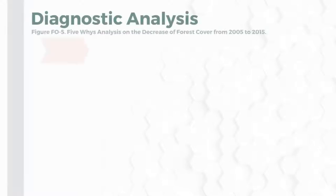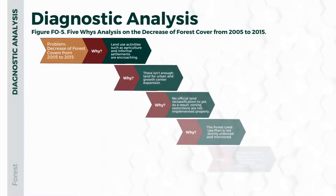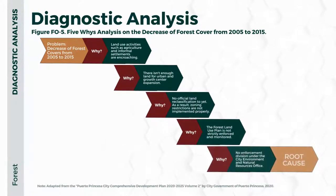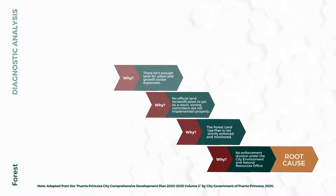This figure shows the five-whys analysis applied to the problem of decreased forest cover from 2005 to 2015. The first why: land use activities such as agriculture and informal settlements are encroaching. Why? There isn't enough land for urban and growth center expansion. Why? No official land reclassification results in zoning restrictions not properly implemented. Why? The forest land use plan is not strictly enforced and monitored. Why? No enforcement division under the City Environment and Natural Resources Office. There are plans and policies available to Puerto Princesa city; however, they lack implementation and monitoring.